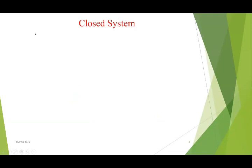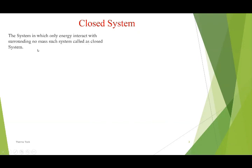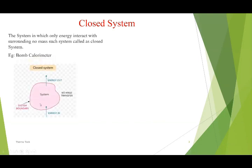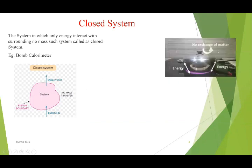A closed system is one in which only energy interacts with the surroundings — there is no mass interaction with the surroundings. As you can see here, the system is separated from the surroundings by a boundary, and only energy enters and exits the system. There is no transfer of mass from the system to the surroundings or vice versa. One example of a closed system is the bomb calorimeter.